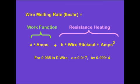The constants for 0.035 inch diameter steel wire are A equals 0.017 and B equals 0.00014. Note that constant B has been modified to account for the fact that the equation was designed to use what is called electrode extension, which is the measure from the wire tip to the top of the arc.